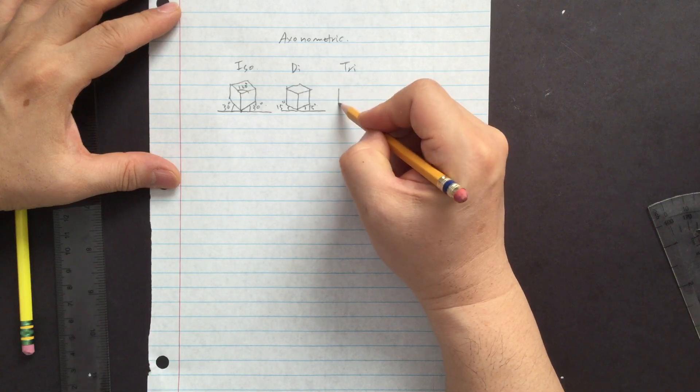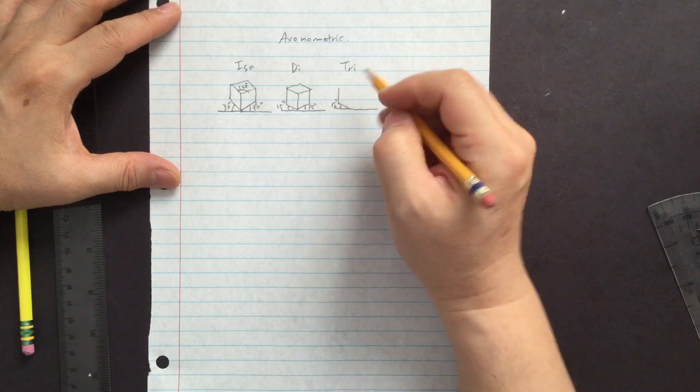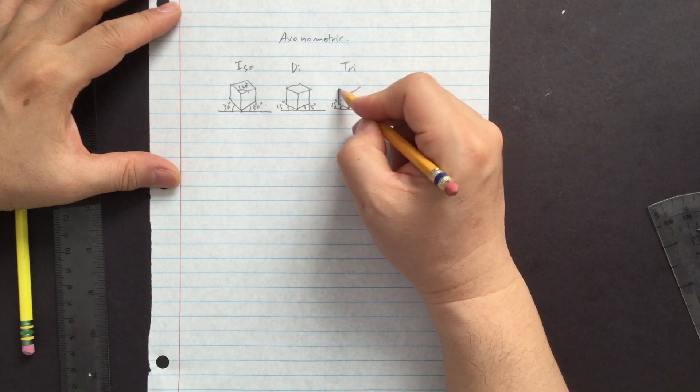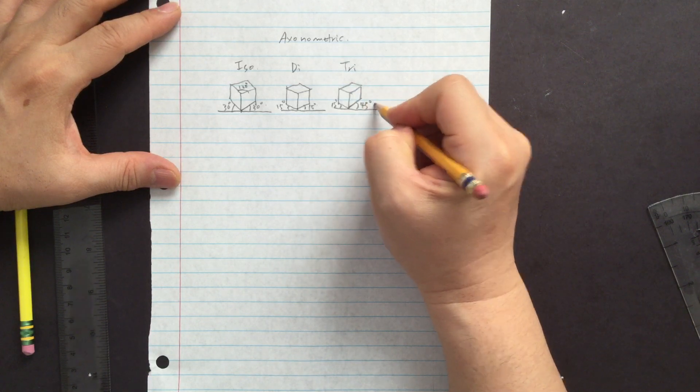Trimetric one side is very low. This is 15 degree and the other side is much more angular. So that's supposed to be 45 degree.